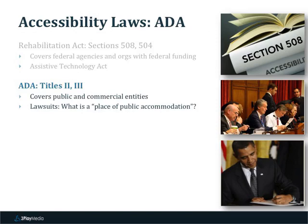The next major accessibility law in the U.S. was the Americans with Disabilities Act of 1990. It had five sections, and Titles 2 and 3 impact closed captioning requirements. Title 2 impacts public entities, and Title 3 impacts commercial entities, specifically calling out places of public accommodation. The big question with Title 3 of the ADA is what constitutes a place of public accommodation. The ADA was written in 1990 before the Internet was as prolific as it is today, so it wasn't really written into the law specifically. However, the ADA has been tested against online businesses in the last 10 years or so, and I'm going to go through a couple of those major lawsuits in a minute.